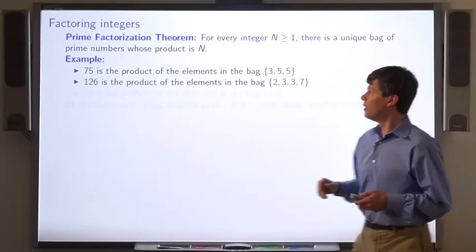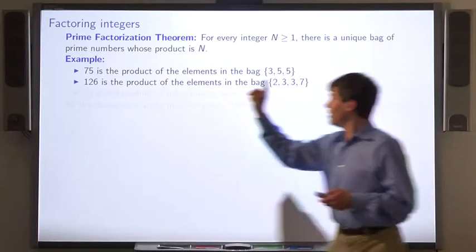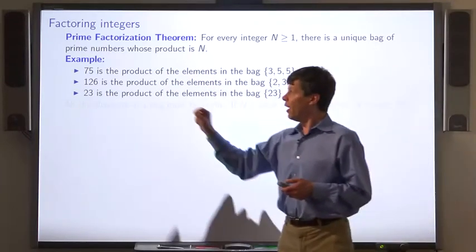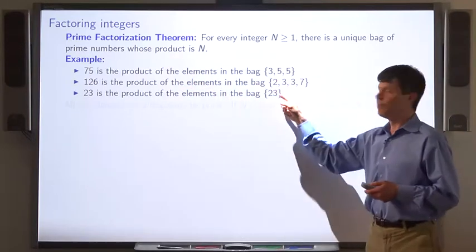These are all primes. The integer 126 is the product of 2, 3, 3, and 7.